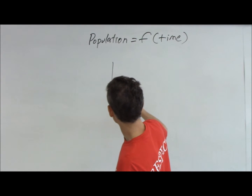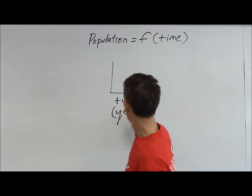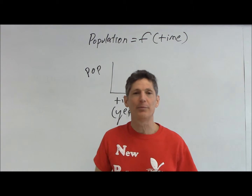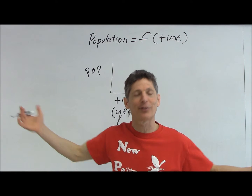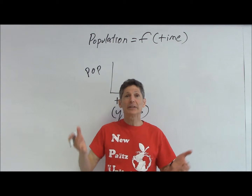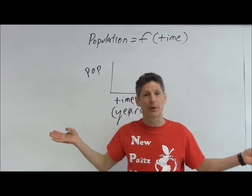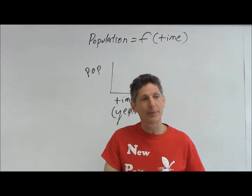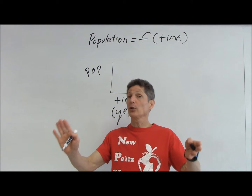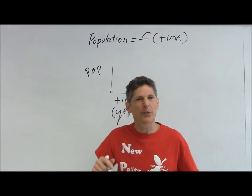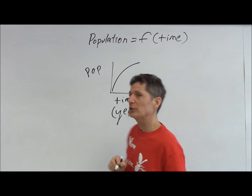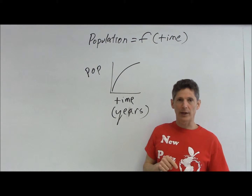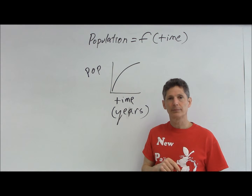I'm going to put time on the bottom, measuring time in years, and population on the side — the number of people that live in New Paltz or someplace. So during some particular time period, maybe a 10-year period, we could say that the population is increasing at a decreasing rate. We're getting more people, but the growth rate is slowing. So the slope is getting less steep.